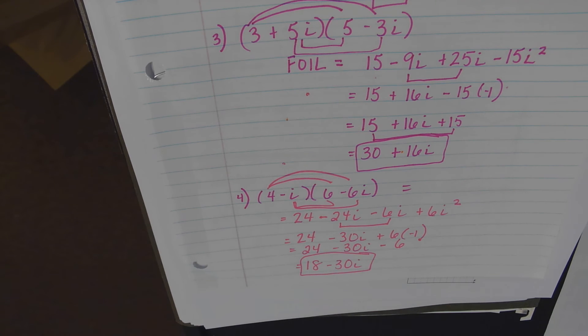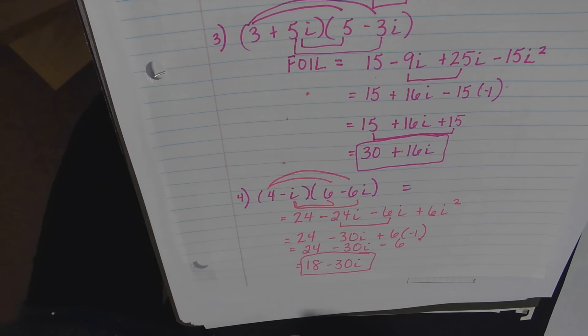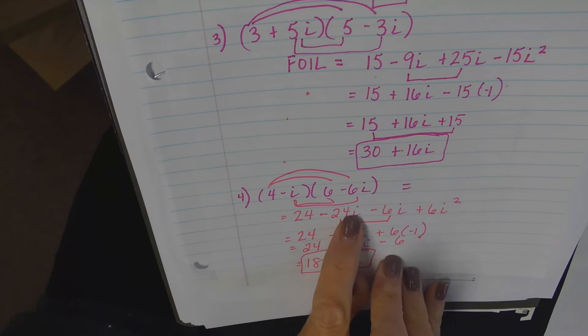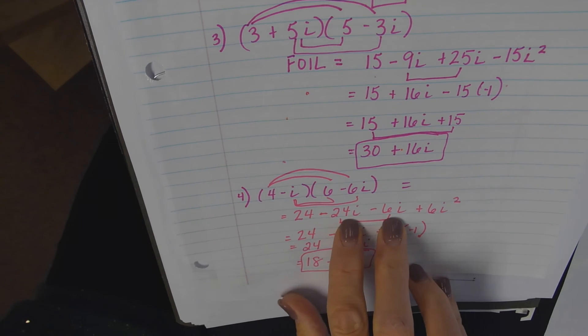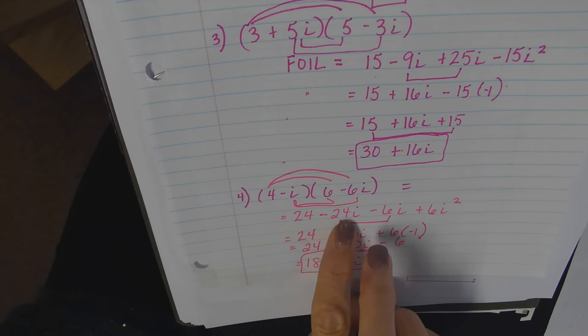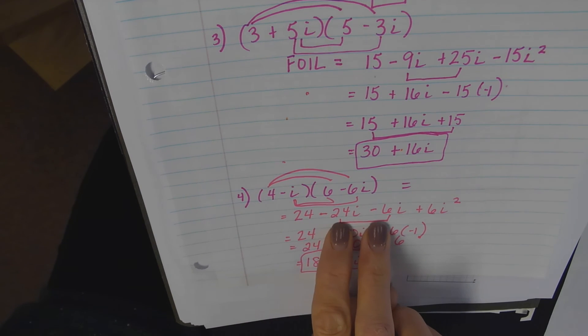Yes ma'am? I got the same thing except for the 24 minus 30i minus 6. I did the 24 minus 30i squared minus 6. Okay, the middle term, there's no square. It's like adding x's and y's. You're just combining them. Okay, we're not multiplying. We're adding and subtracting. That's all you're doing.